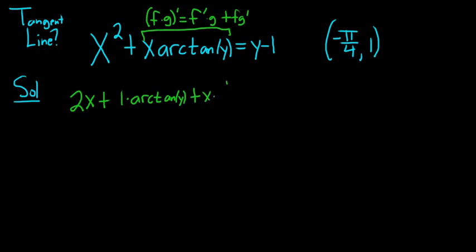plus the first, x, times the derivative of arc tan y. The derivative of arc tan y is 1 over 1 plus y squared times the derivative of the inside function. Y is your inside function. Its derivative is simply dy dx.